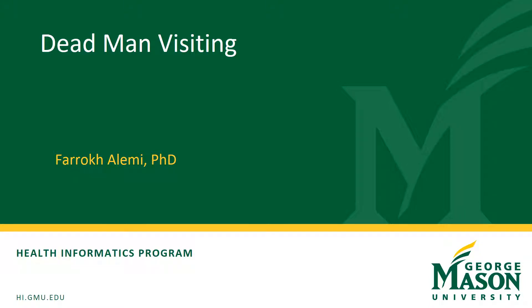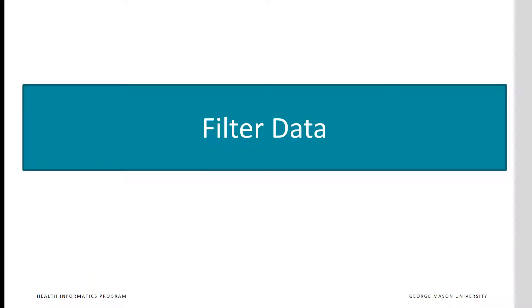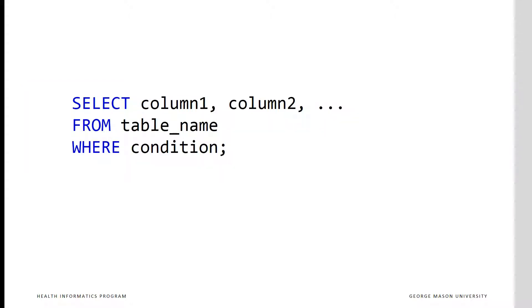Hello, this is Dr. Alemi with a discussion of how to use WHERE and HAVING commands. The purpose of WHERE and HAVING is to filter records of data. SELECT filters fields, but WHERE filters rows of data within the same table. After the reserved word WHERE, the condition is specified.